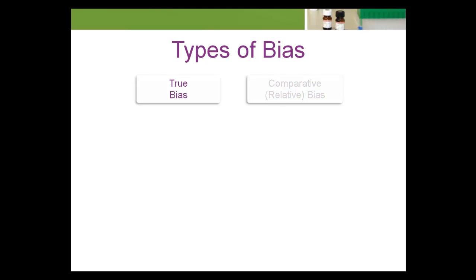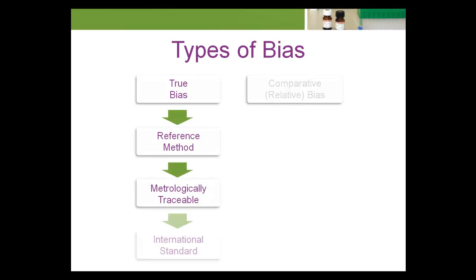True bias is the difference between an observed value and the value for the same analyte derived by a reference method that's metrologically traceable to an international standard. Most control materials do not have such traceability, and those that do are usually very expensive.